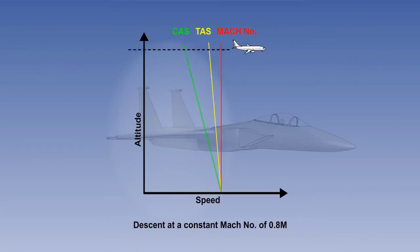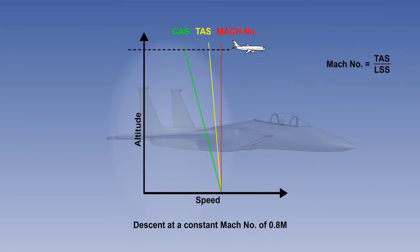Let's now see what happens if we descend in the standard ISA atmosphere at a constant Mach number. In the descent, the temperature will be increasing, and so the LSS will be increasing. Remember, the Mach number is the ratio of the TAS to the local speed of sound. Therefore, if the Mach number is to remain constant, the TAS must increase. The air density is also increasing in the descent. Therefore, the CAS must increase.